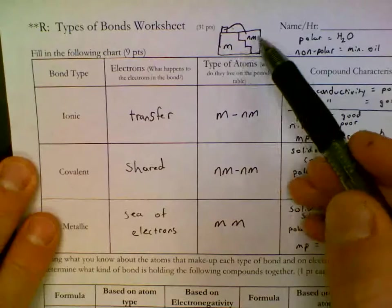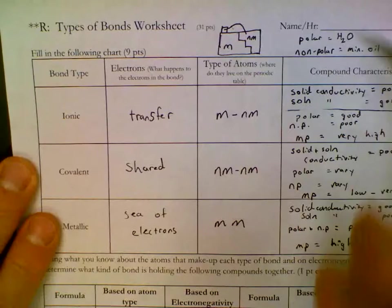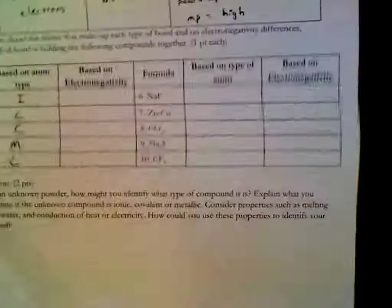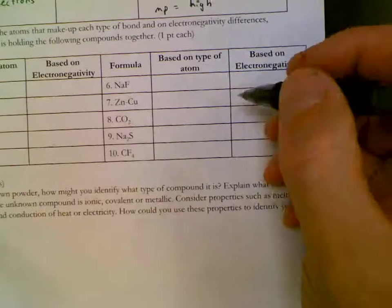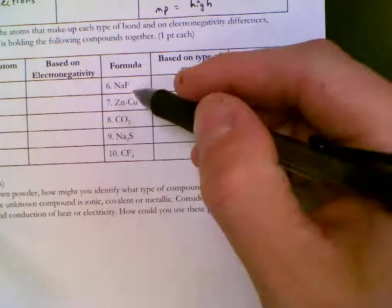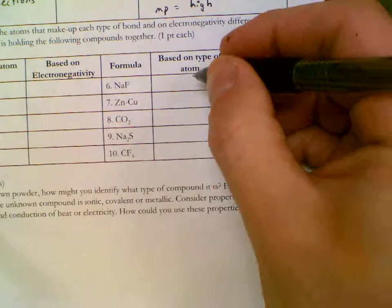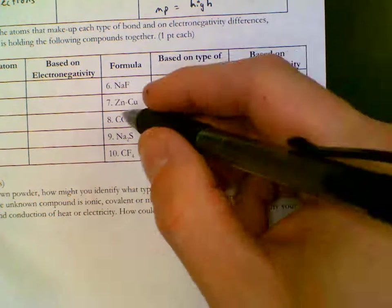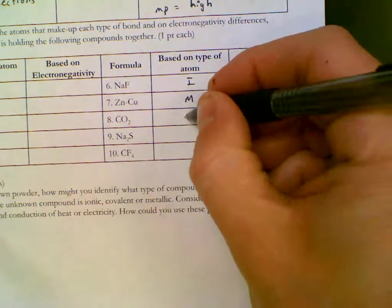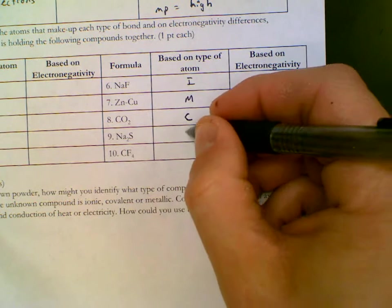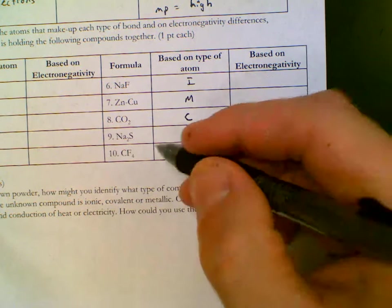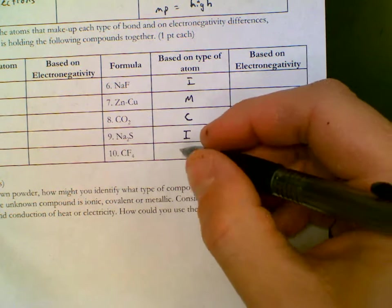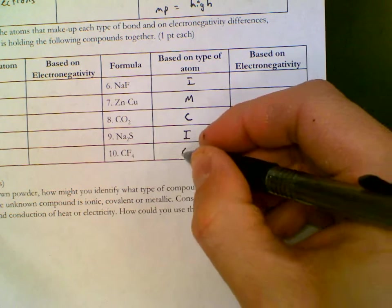We're going back up to this picture at the top of the page. A metal to a nonmetal. Do you live left of the stairs or right of the stairs? Based on atom type, so sodium is a metal, fluorine is a nonmetal, so that's ionic. Two metals, metallic. Nonmetal, nonmetal, that's covalent. Metal, nonmetal, that's ionic. And lastly, carbon and fluorine are both nonmetals, so that makes this covalent.